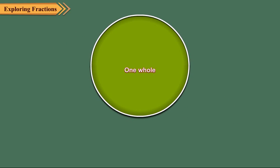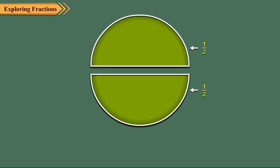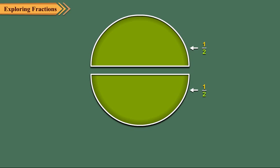Draw a circle and divide it into two equal parts. Clearly, each part represents one upon two. So, two halves make a whole.